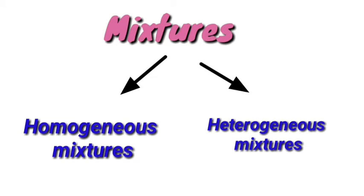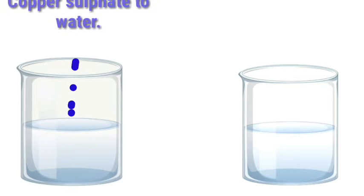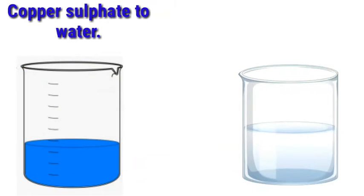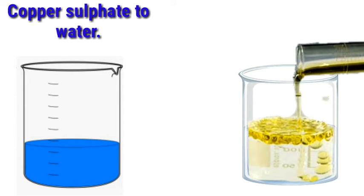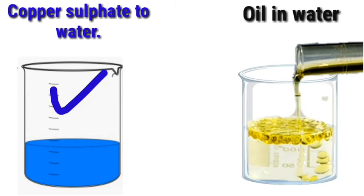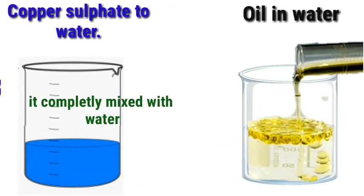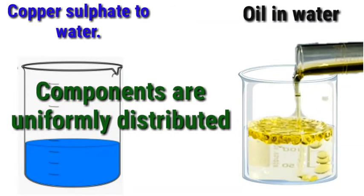Homogeneous and heterogeneous mixtures are very important topics. What are the examples? What are the differences? For the first example, we add copper sulfate crystals to a glass of water. Copper sulfate is a mixture with water. The components of copper sulfate are uniformly distributed in the water.